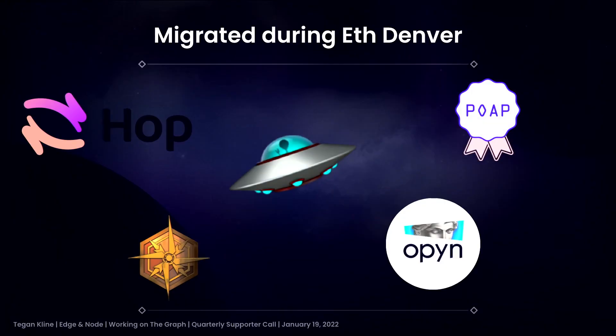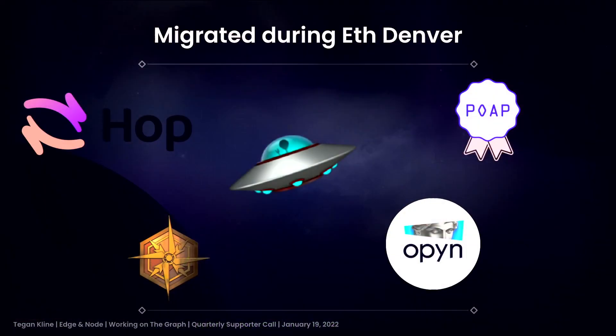During ETH Denver, I was personally meeting with some very brave projects — the pioneers of decentralization — and sat down with them to help migrate their subgraphs from the hosted service to the decentralized network. I want to show them to you: it's the Hop Protocol on one hand, then POAP — soon when you go on the POAP website on Ethereum mainnet, those queries will be powered by the decentralized network. Then there's the Emblem DAO, a very cool project launching in the next weeks where you can collect emblems representing your activity on different protocols. And OPEN was here to migrate their new product, the Squeeze, to the decentralized network.